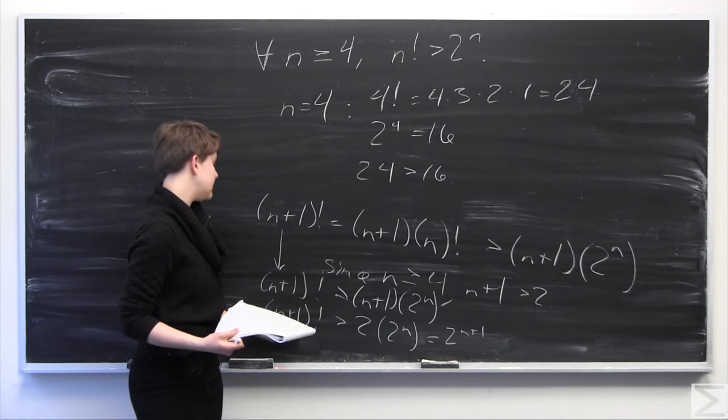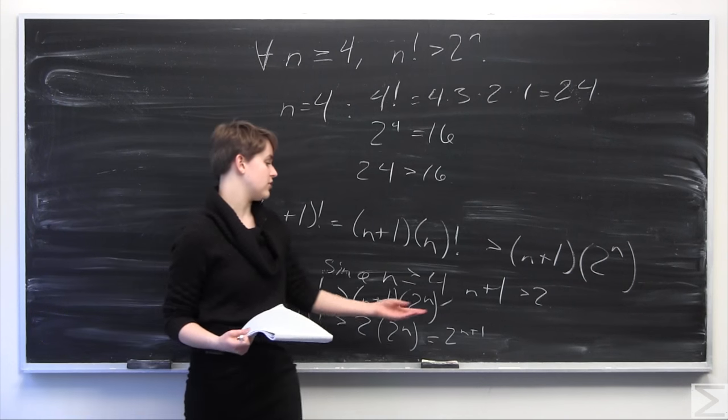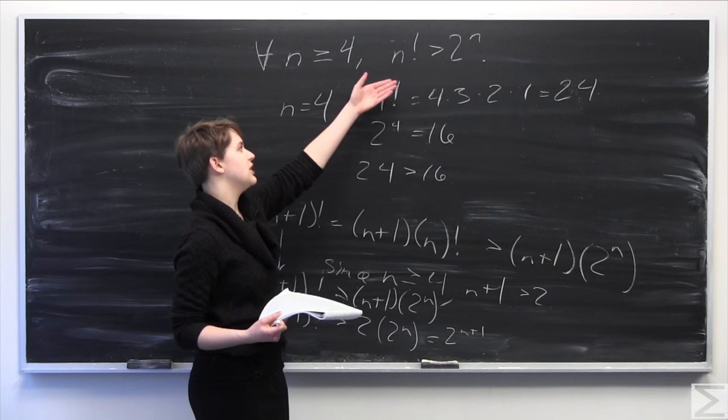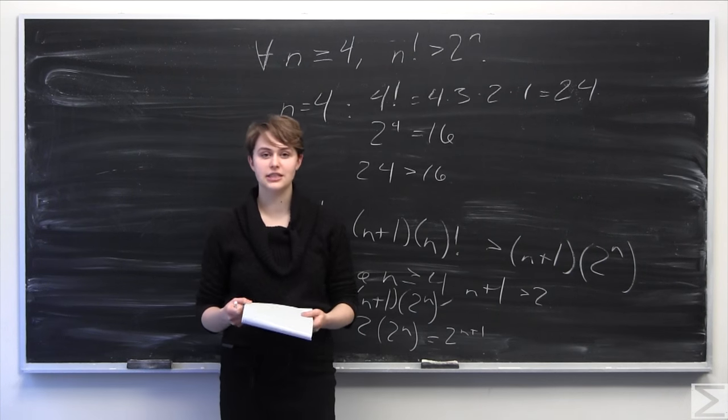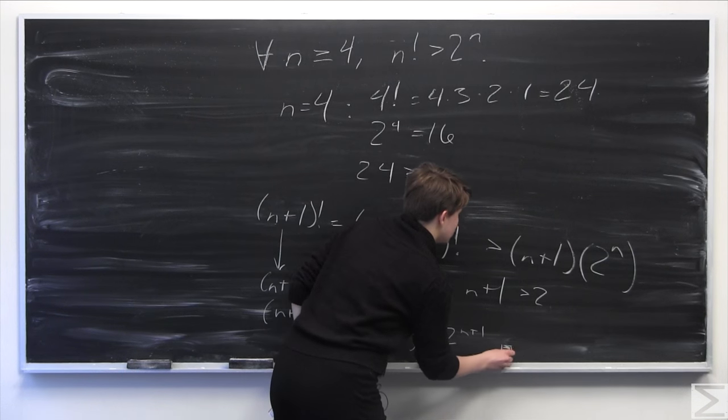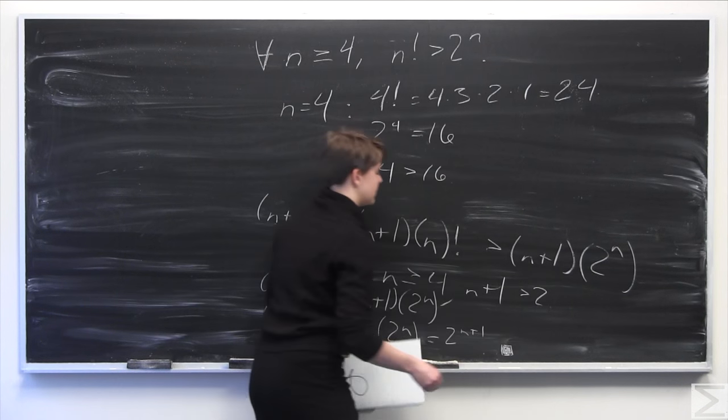So that finishes up this proof, because we can see here that we have n plus 1 factorial is greater than 2 to the n plus 1, which is the same as our initial expression here, our induction hypothesis with n plus 1 plugged in instead of just n. So that will go ahead and solve this proof here. That's one method of doing this, probably the easiest method of mathematical induction.